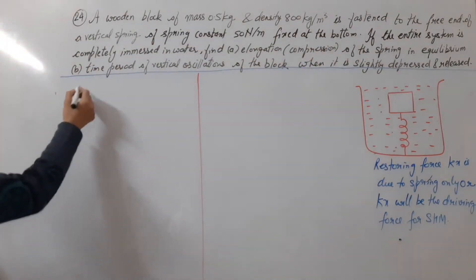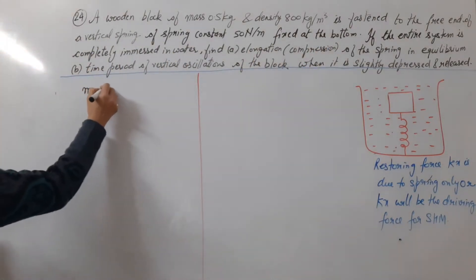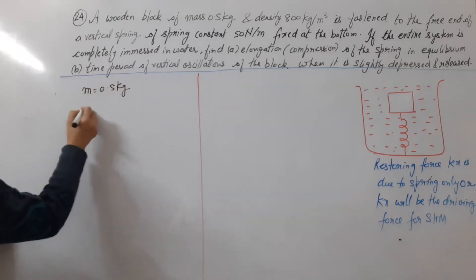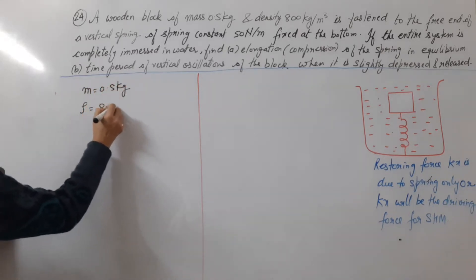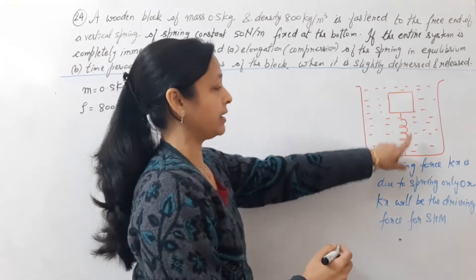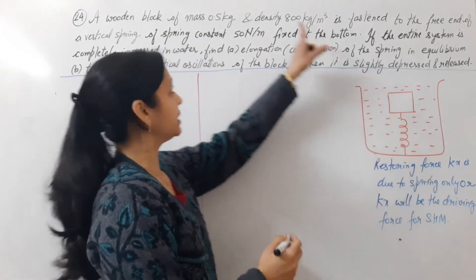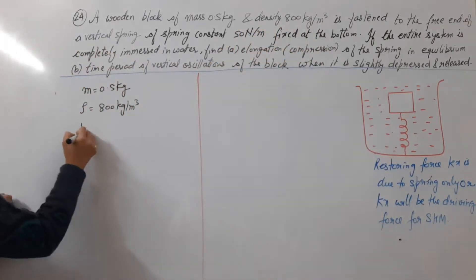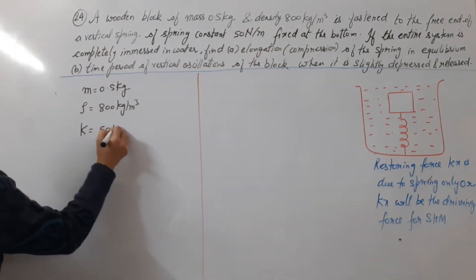So we have given data: mass is 0.5 kg, density is 800 kg per meter cube, and we have a spring constant given by 50 N per meter.